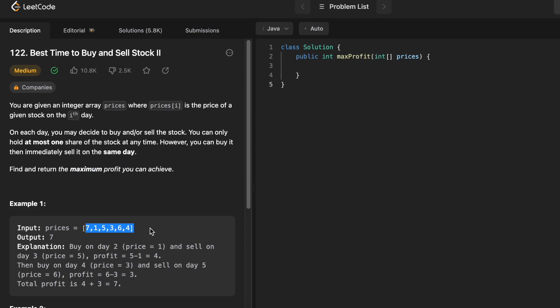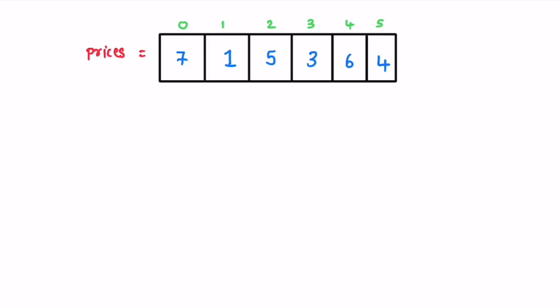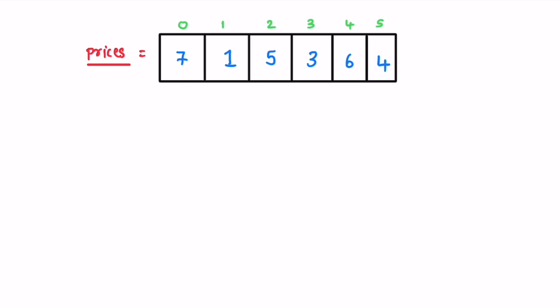So let's take a look at this example and see how this question can be solved. I've taken the same example given to us — this is the prices array, and now we have to find out the maximum possible profit. So these are the stock prices on the given days. For example, let's say this prices array is for the stock Apple, and we are given only one Apple stock. Since we have to buy the stock first prior to selling, there is no point starting your iteration at the first index position because you won't be able to register a profit.